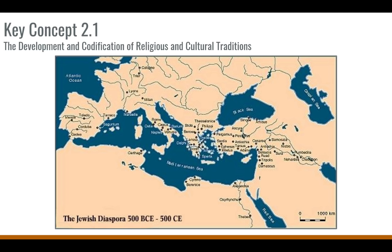Judaism is a monotheistic religion. The Hebrew scriptures are codified, and Judaism is influenced heavily by Mesopotamian culture and legal traditions. The ethnic Jews who lived in the eastern Mediterranean were conquered at various times by different groups — the Assyrians, the Babylonians, and the Romans. These conquests contributed to the growth of Jewish diasporic communities all around the Mediterranean and the Middle East, as this map shows. Still to this day, Jewish people are spread around the world in a fairly large diaspora.